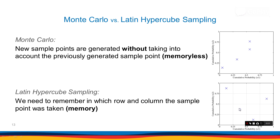With Latin hypercube sampling, we have one sample per row and one sample per column, and this is a Latin square. The main takeaway from this tutorial: Monte Carlo is memoryless, but Latin hypercube sampling has memory. In the next tutorial, I'm going to compare the performance of Monte Carlo with Latin hypercube sampling. Thanks for watching this tutorial.